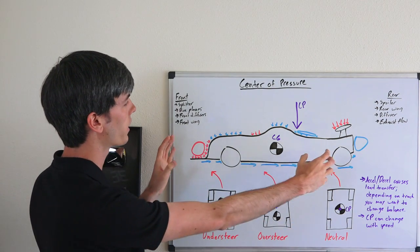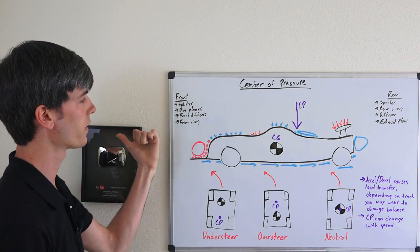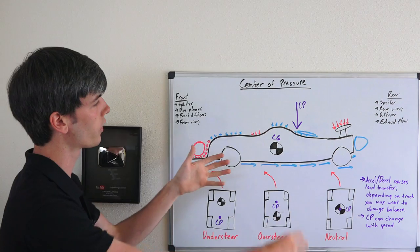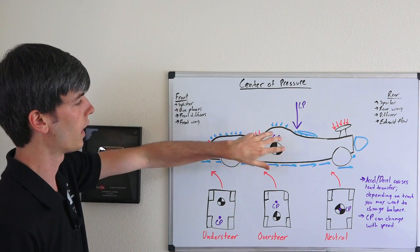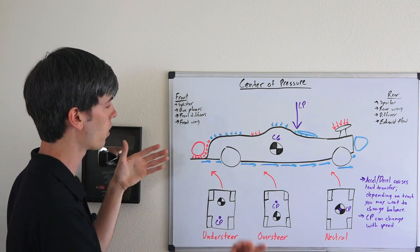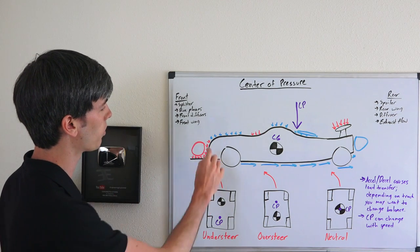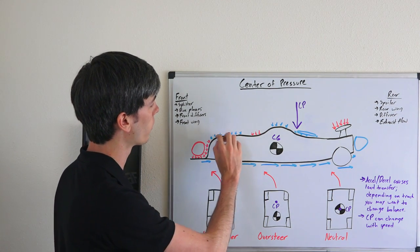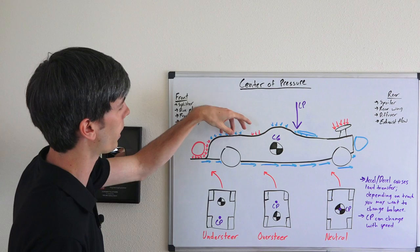So basically we have a car here and it's going to be traveling through the air in this direction. You've got all these different forces of air pressure on this car. At the front of the car it's ramming into the air, you're going to have this high pressure area. And then as you start to go over it, you're going to have less pressure, perhaps some lift.